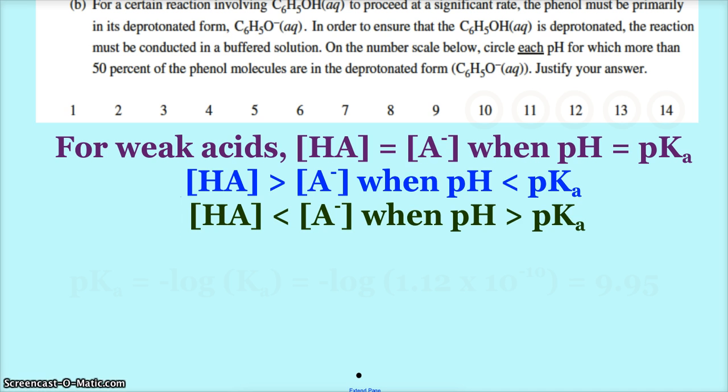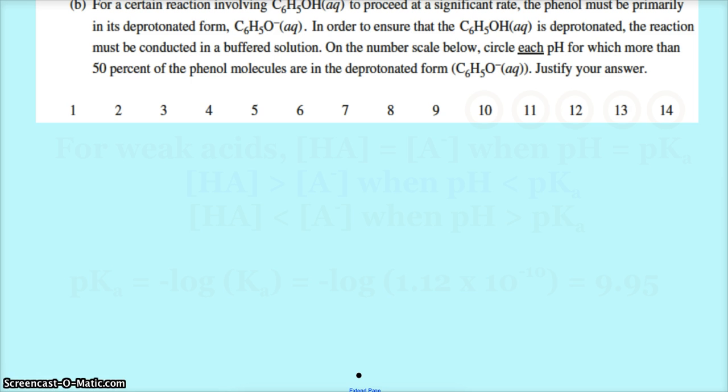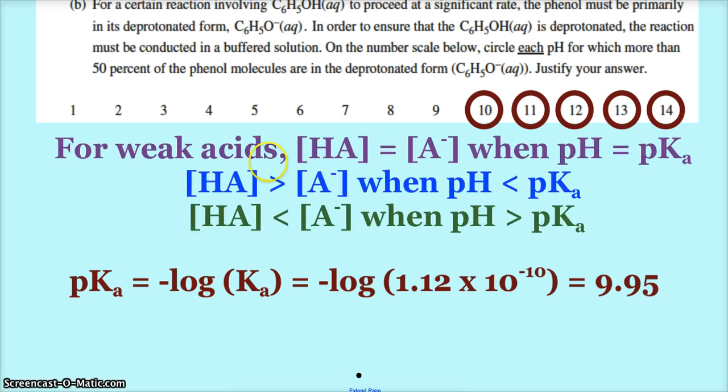HA is greater than A minus when pH is less, so like at the beginning of the titration up until the half equivalence point. Past the half equivalence point, when pH is greater than pKa, that's when the deprotonated form takes over.